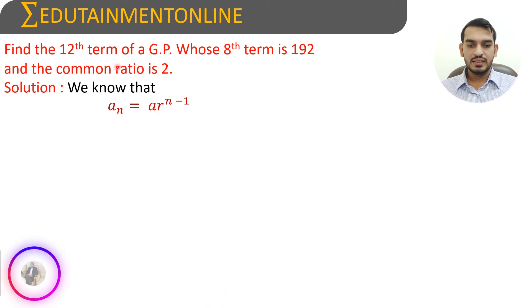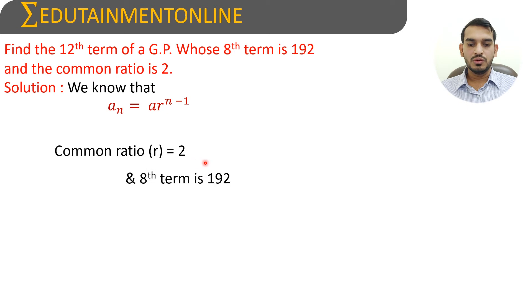Here it is given that 8th term equals 192 and common ratio equals 2. So 8th term is denoted by a_8 which equals 192.